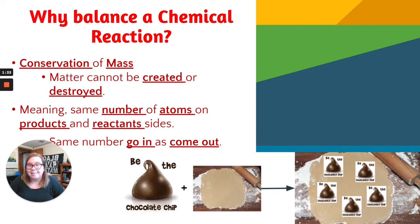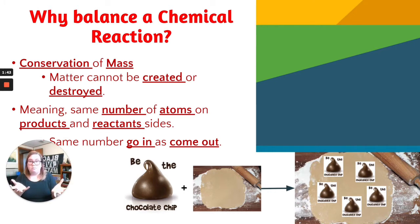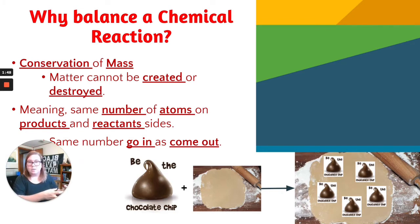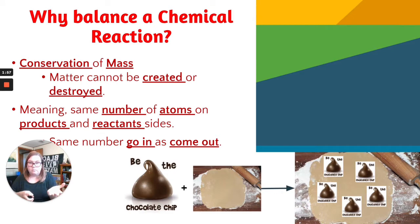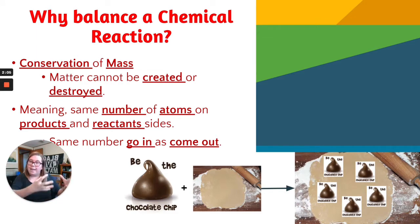Another way to think about this is the chocolate chip cookie example. If I have my chocolate chip cookies and I have, let's say, five chocolate chips and one piece of dough, and I mix them together and bake my cookies, even though they've been put together, mixed, and baked, I still have the one thing of dough and the five chocolate chips, even though they're in a bit of a different form. So the same amount came out as went in to that reaction.